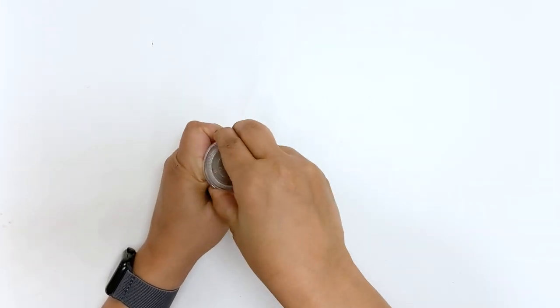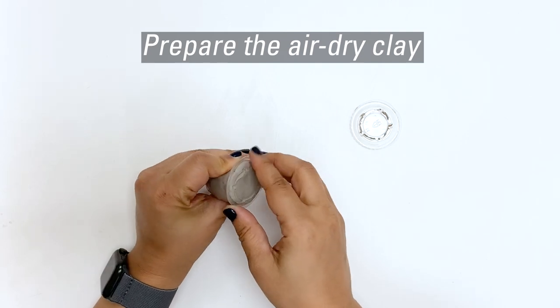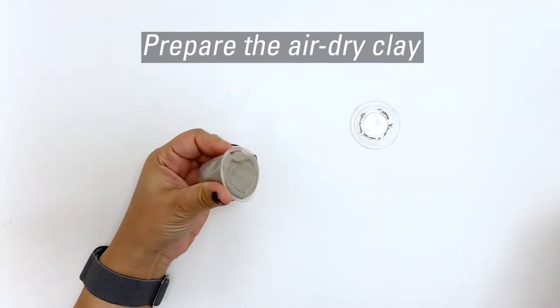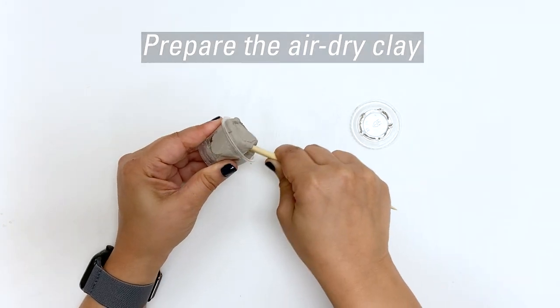Step one is to remove the clay from the portion cup. As you'll see, I needed to use the tool to get it all out, but your clay might be a little easier to manipulate or not.